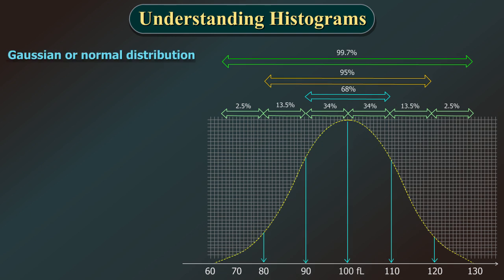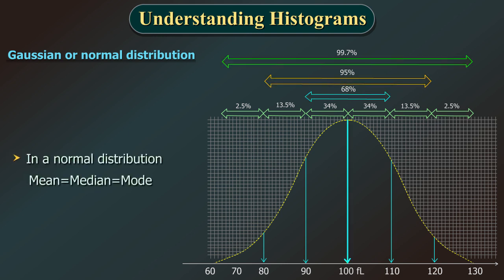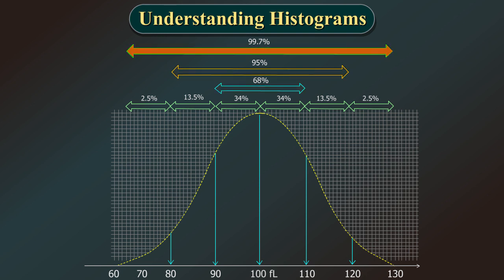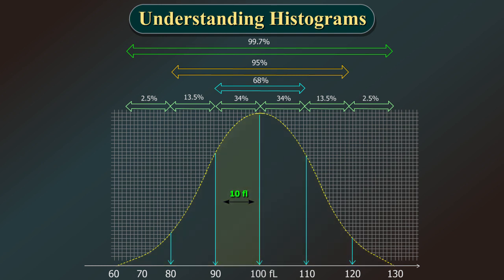This variation is what we call Gaussian or normal distribution. Any parameter with Gaussian distribution falls in a bell-shaped curve when graphically distributed. The cells fall around a mean with equal dispersion following the 68-95-99.7 rule. In a normal distribution, the mean equals the median equals the mode. Assume 1,000 cells are counted, the mean is 100 FL, and a standard deviation (SD), which means the unit degree of dispersion, is 10 FL.